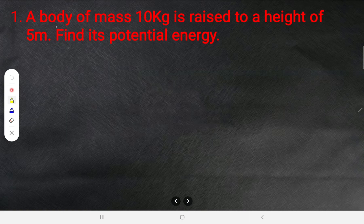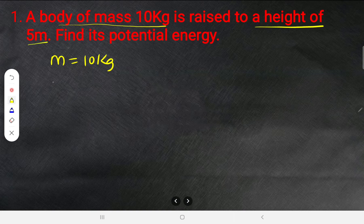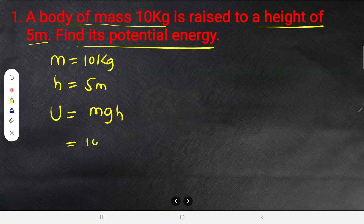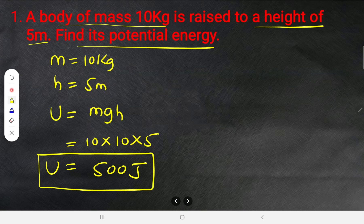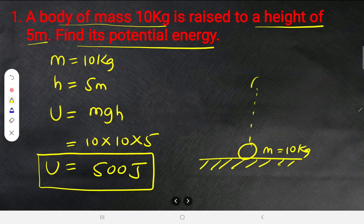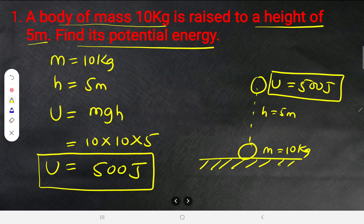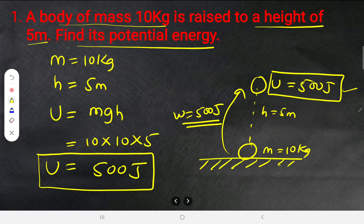Numerical 1: A body of mass 10 kg is raised to a height of 5 m. Find potential energy. U = mgh = 10 × 10 × 5 = 500 J. So the potential energy is 500 joules, and 500 joules of work must also have been done to raise it.